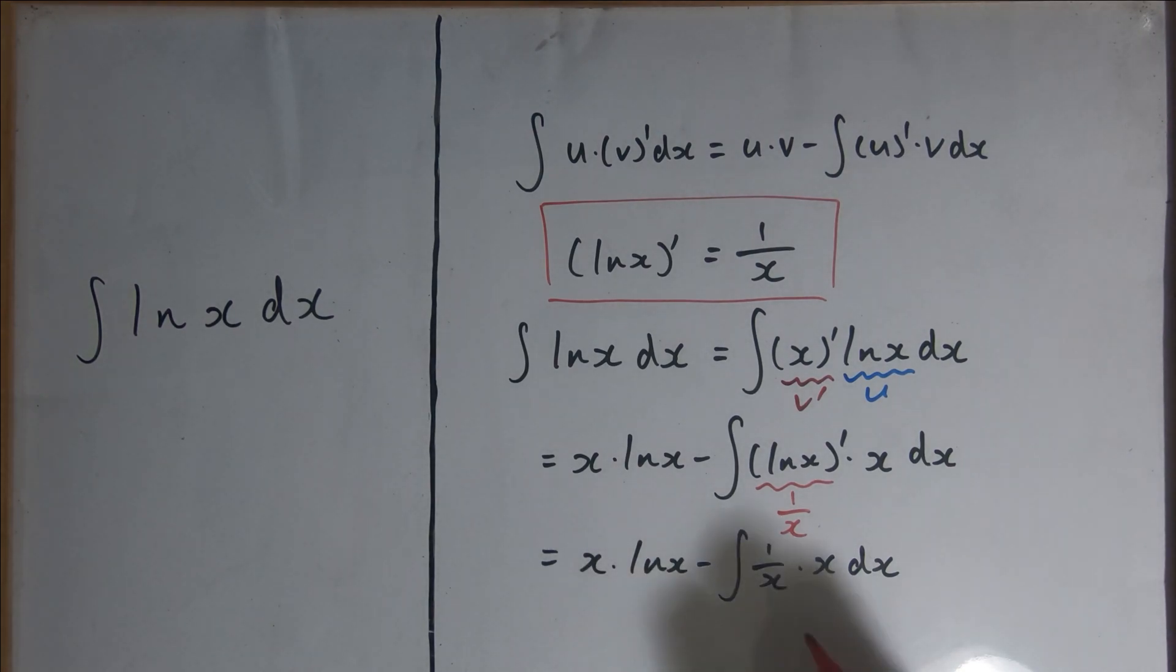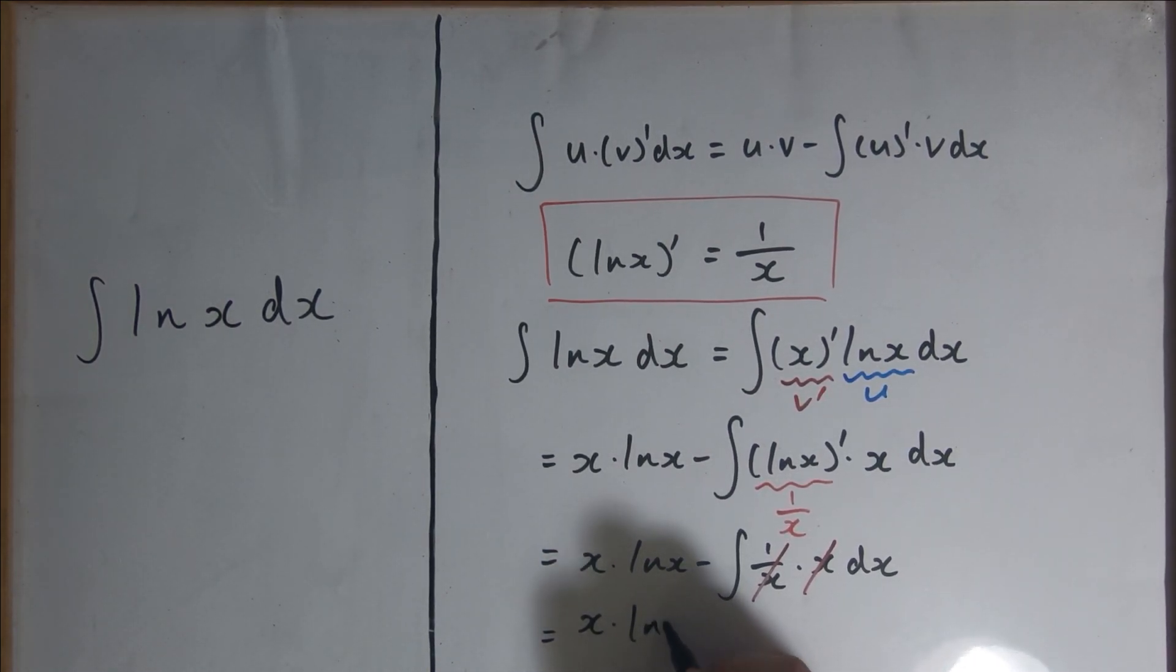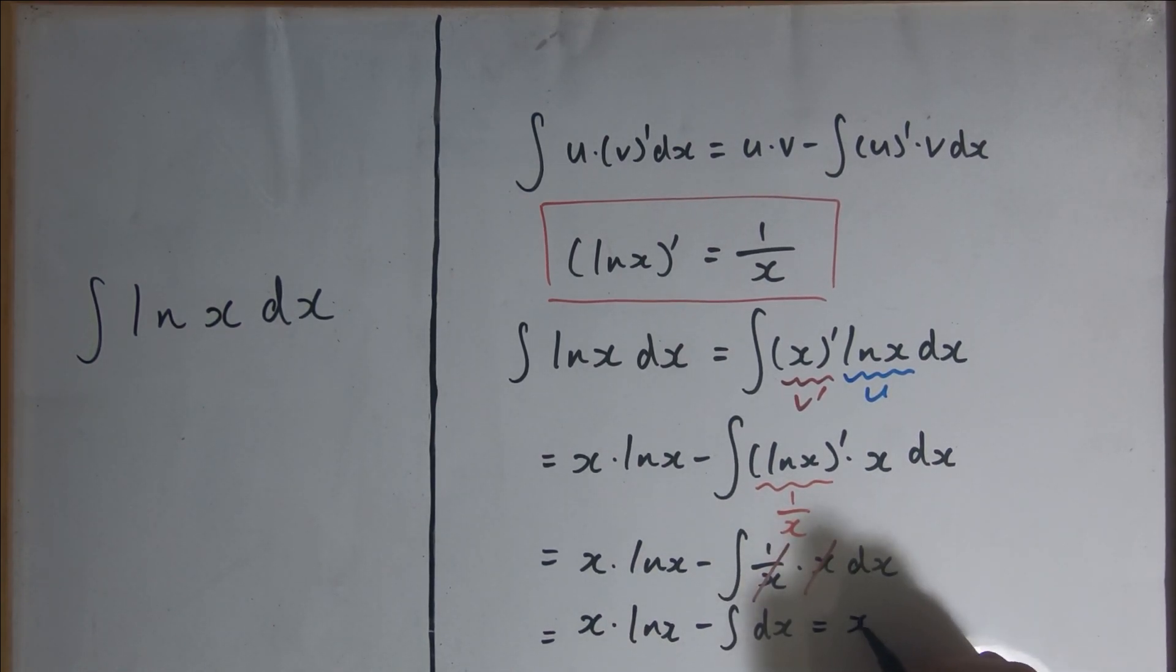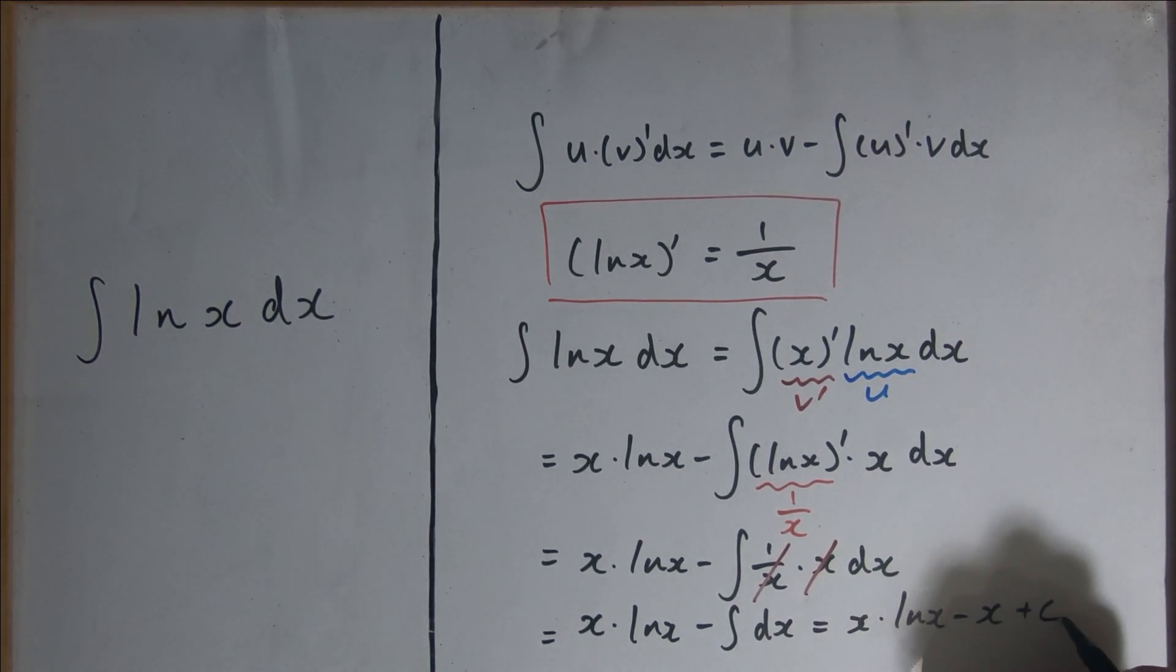The 1 over x and x cancel with each other, leaving us with x times the natural log of x minus the integral of dx, which equals x times the natural log of x minus x plus c.